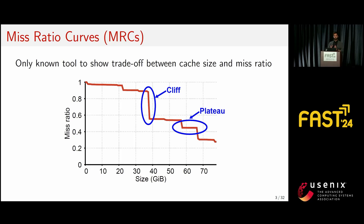Cliffs are regions where a small increase or decrease in the cache's configured size will lead to a large increase or decrease in performance. If you're configured to the left side of a cliff, a small increase in cache size gives a big win in performance. Plateaus are flat regions on the MRC where any cache size configured on a plateau has the exact same performance. If you're on a plateau, you can move to the leftmost point and see no performance degradation with cost savings.